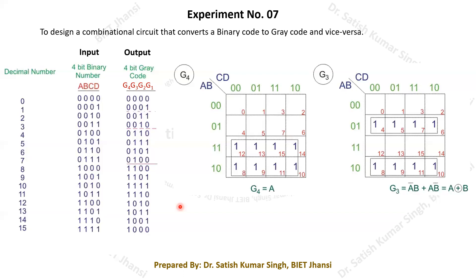Once the truth table is filled with gray codes corresponding to each binary code, we form the Karnaugh map to get the Boolean expressions for G4, G3, G2, and G1, based on inputs A, B, C, D — the binary bits. We need to make a four-variable Karnaugh map since we have four input bits, and mark the cells where the output equals one.